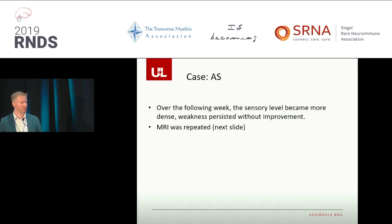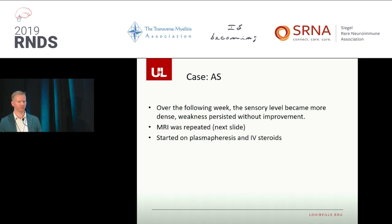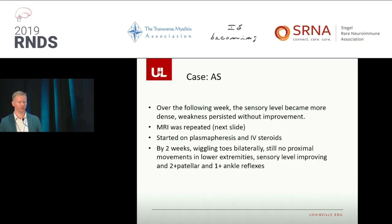She was getting worse, so we repeated her MRI — I'll show you what we saw. We started her on plasmapheresis, where we filter the blood by taking it out of the body, running it through a series of filters, removing the plasma, replacing it, and then putting it back. We also gave her IV steroids, a treatment we don't use with Guillain-Barré. By two weeks later, she was wiggling her toes. She still couldn't walk, but her sensory level was improving, her reflexes returned — there were glimmers of hope.